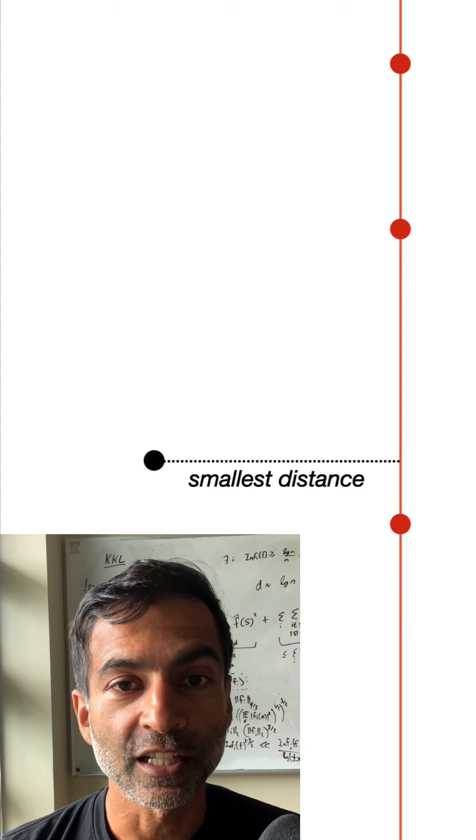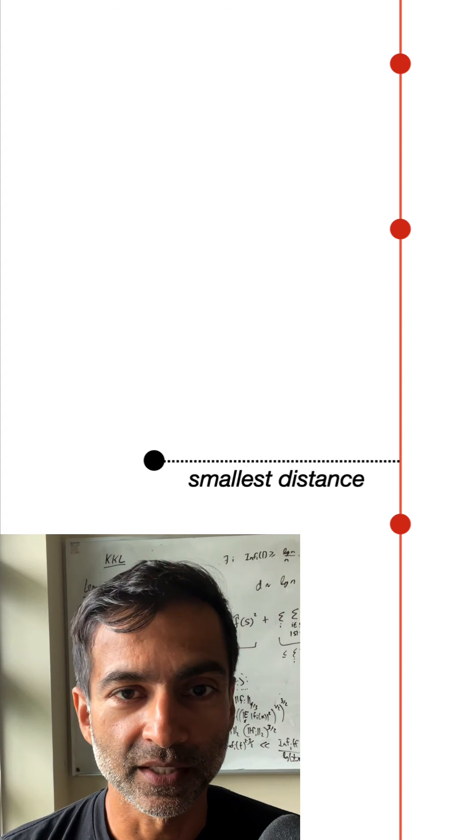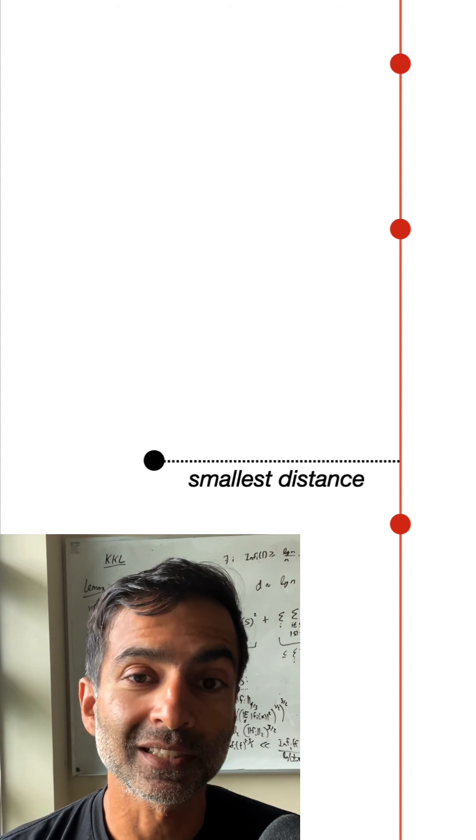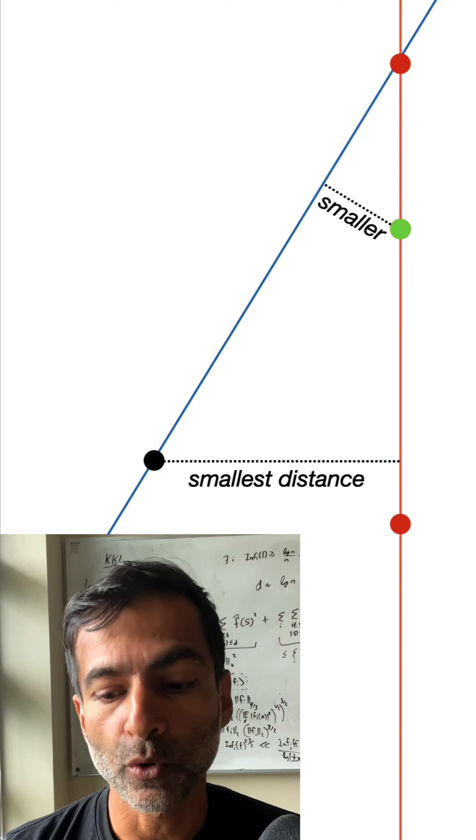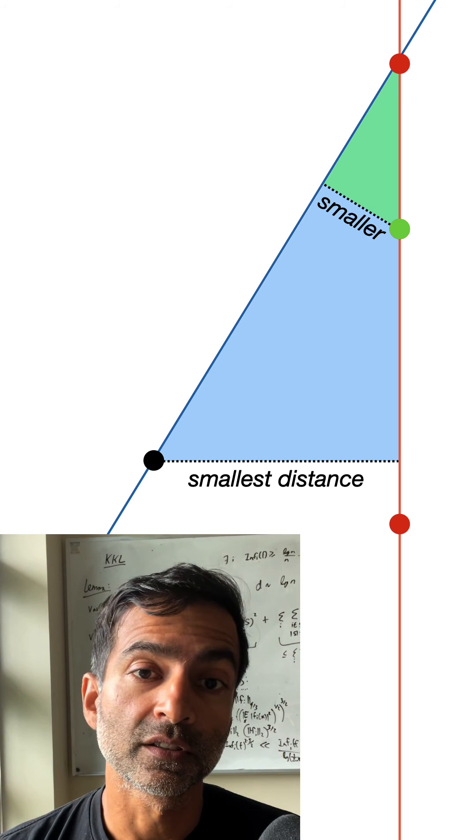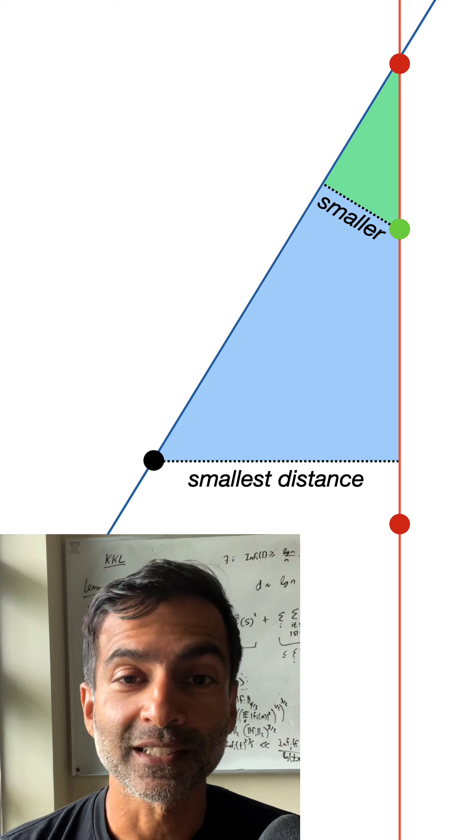Now it may well be that the initial configuration of the black point and the red line looks like this. But it doesn't matter. We can still find a green point that is closer to a blue line for exactly the same reason.